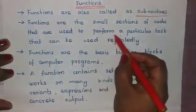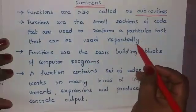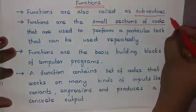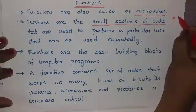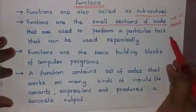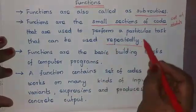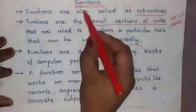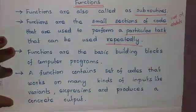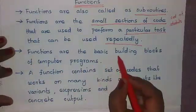Next, functions are small sections of code that are used to perform a particular task and can be used repeatedly. Here, small sections of code means a set of statements in our program. When a set of statements needs to be repeated many number of times, we can use functions to easily finish that particular task.